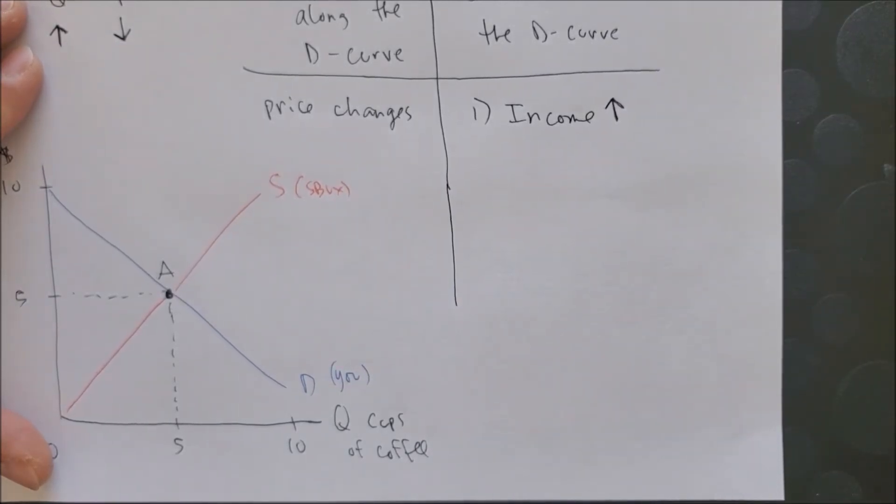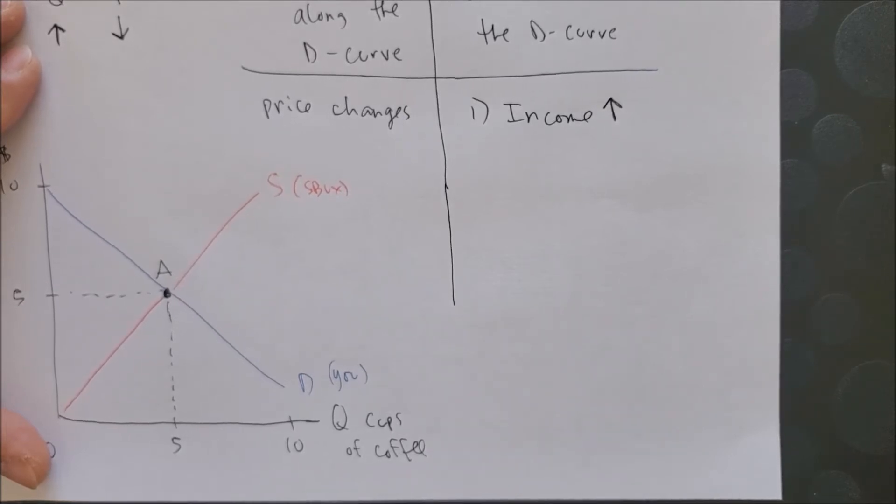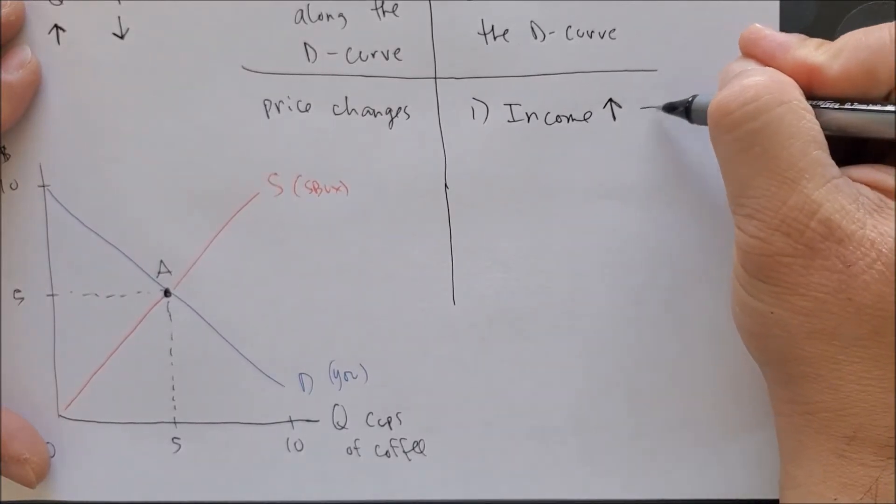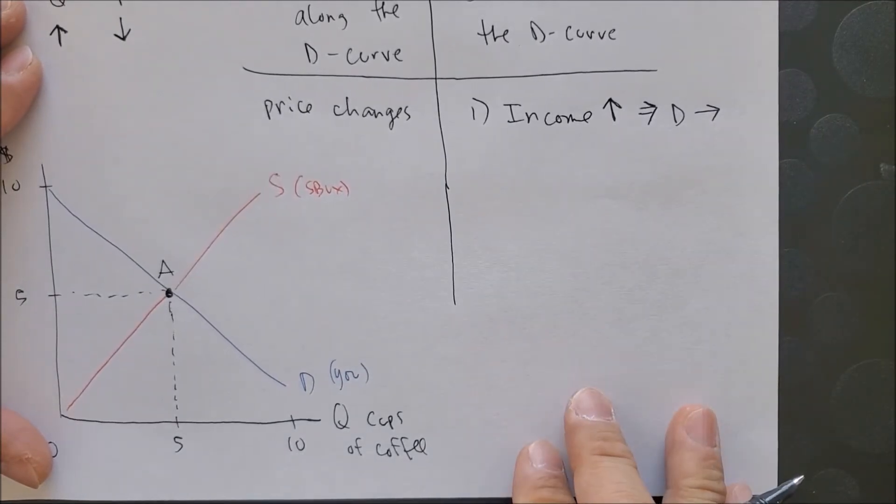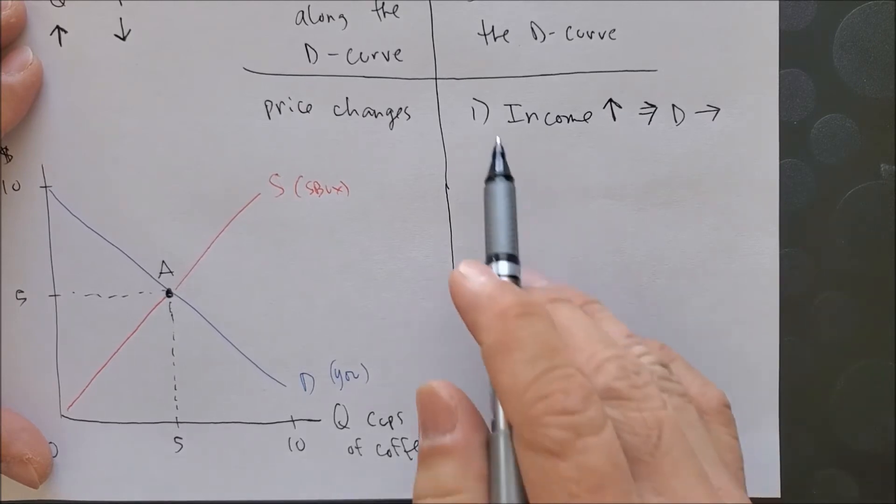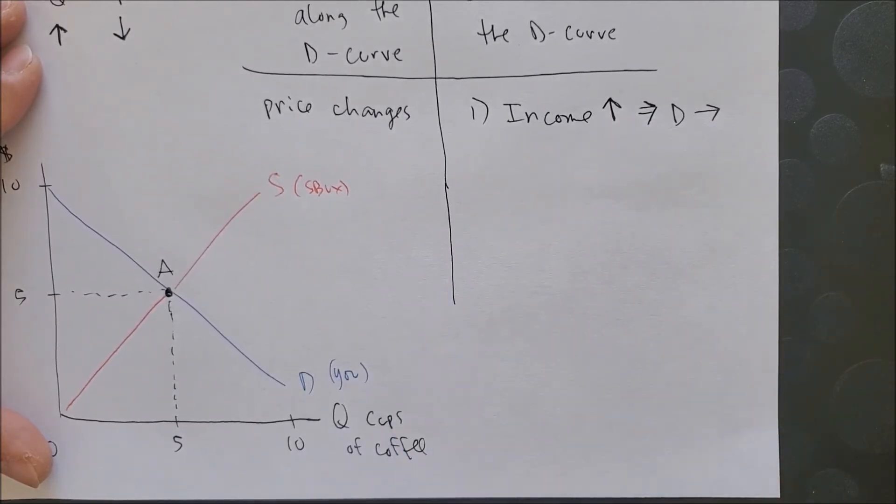And when you consume more goods, you will demand more goods. And when you demand more goods, the demand curve is going to shift to the right. We can call this the wealth effect, that you feel more wealthy, hence you will consume more goods.